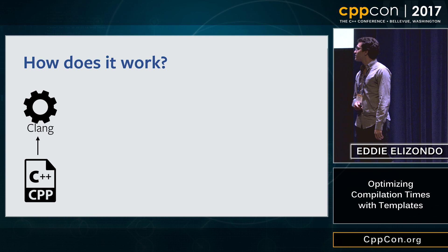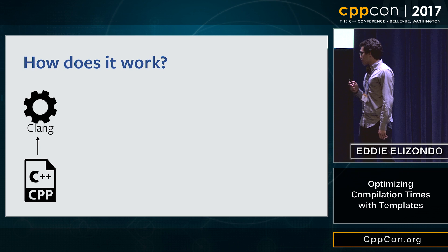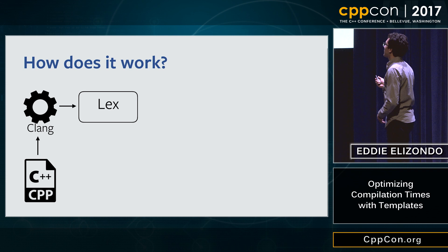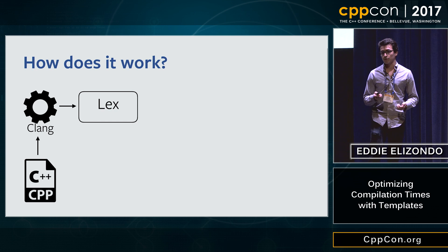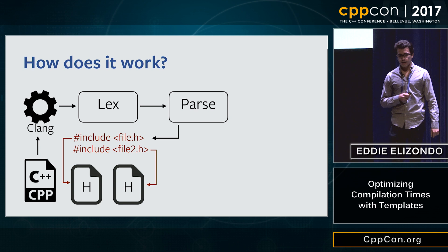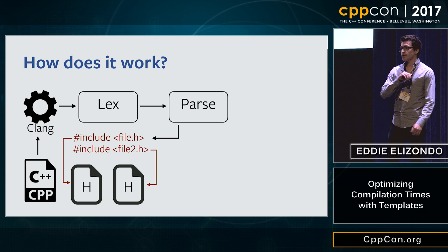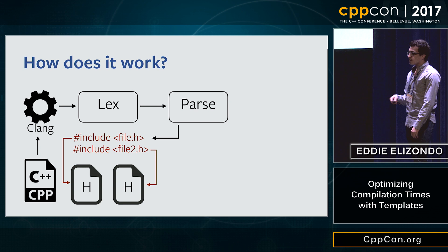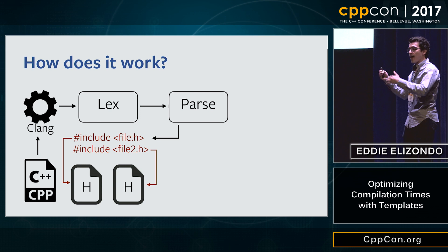You pass your source file to your compiler frontend. The first step is lexing — tokenizing your entire source code. The next step is parsing. The parser finds any includes in your source file and copies and pastes those headers on top of your .cpp file, doing that recursively. So if you have more includes within an include, it does that too, and at the end you have all the headers copy-pasted on top of your .cpp file.